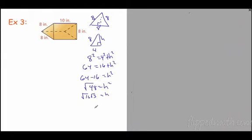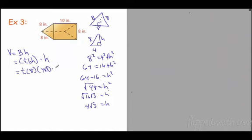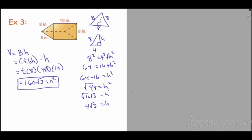Taking the square root of 48 gives us 4 radical 3. Now we plug into the volume formula: V equals big B times h. The area of the triangle is one half base times height, so it's one half times 8 times 4 radical 3, times the prism height of 10. Multiplying that out gives us 160 radical 3 cubic inches.